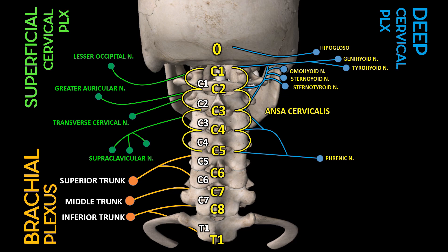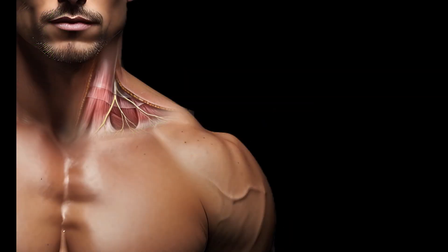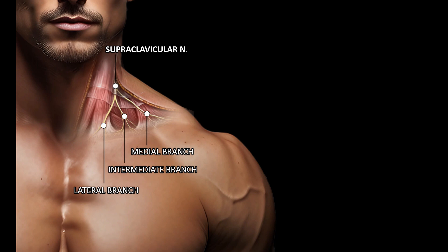Among the spinal nerves originating from the cervical spine, the ones that play a direct role in innervating the shoulder include the supraclavicular nerve from the superficial cervical plexus, and the upper and middle trunks of the brachial plexus. The supraclavicular nerve arises from the superficial cervical plexus, originating from the ventral rami of C3 and C4, and emerges from the posterior border of the sternocleidomastoid muscle. It descends cordially in the neck, deep to the platysma beneath the superficial cervical fascia, before dividing into medial, intermediate, and lateral terminal branches.